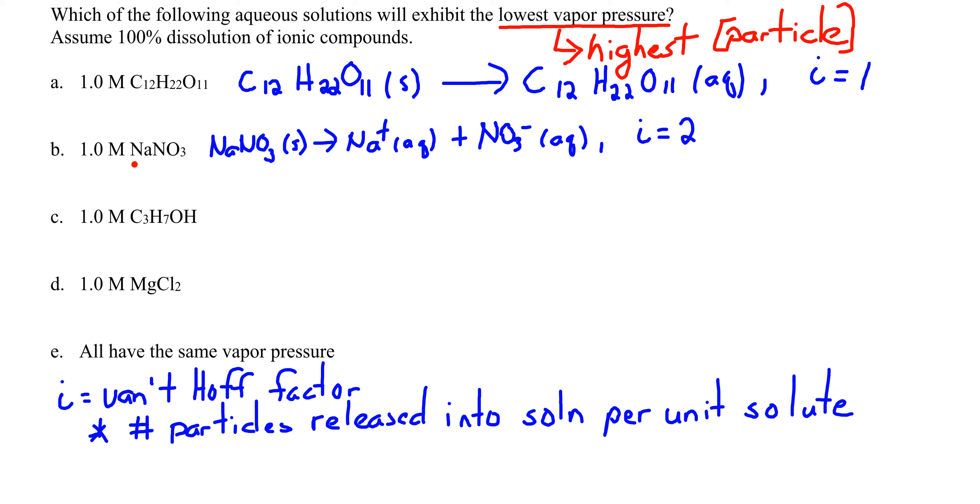Sodium nitrate is an ionic compound. It contains a metal and a polyatomic ion. When dissolved in solution, it dissociates into ions. We're told to assume 100% dissociation of ions, so all of the sodium nitrate that dissolves is going to dissociate into sodium plus nitrate ions. You have a Van't Hoff factor equal to 2 because for every unit of sodium nitrate that dissolves, we have two particles in solution.